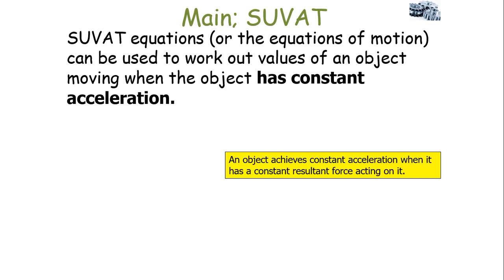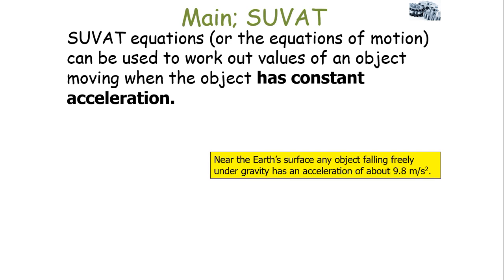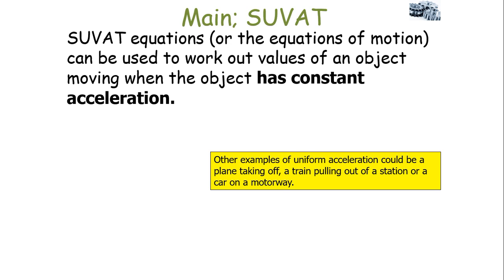An object achieves constant acceleration when it has a constant resultant force acting on it — that's Newton's second law of motion. The most common example of constant acceleration in the real world is when an object is falling freely under gravity. Near the Earth's surface, any object in free fall has an acceleration of 9.8 meters per second squared. Other examples include a plane taking off, a train pulling out of a station, or a car on a motorway.